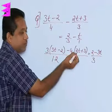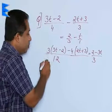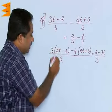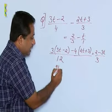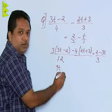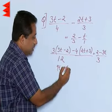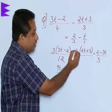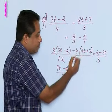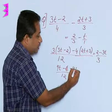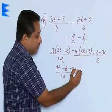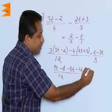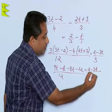Now, how do we solve this expression? We will have to open the brackets. When we open the brackets, we will have to multiply these two terms. 3 multiplied by 3t becomes 9t, 3 into minus 2 becomes minus 6 upon denominator 12, minus 4 into 2t becomes minus 8t, minus 4 into plus 3 becomes minus 12. On the right side we are having 2 minus 3t upon 3.